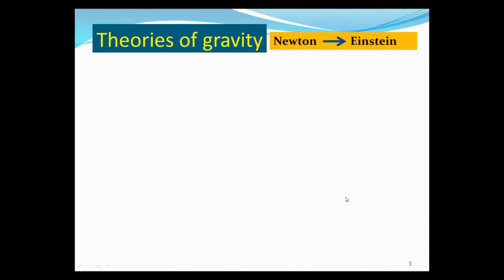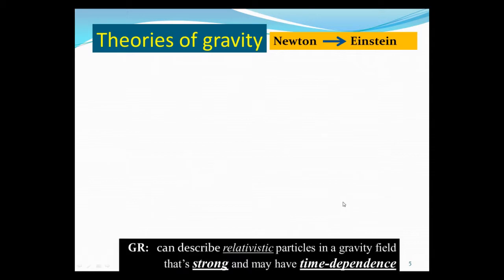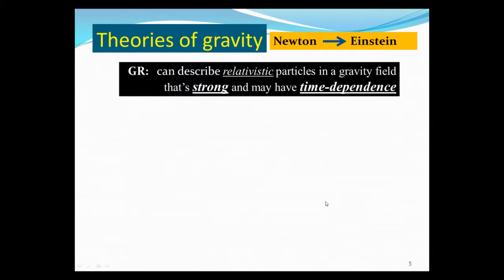So, Einstein's theory supersedes Newton's theory. In what sense is it an extension of Newton's theory? GR can describe, not surprisingly, relativistic particles—by relativistic we mean particles that can move close to the speed of light. But also, GR is the theory of gravity where the gravitational field can be much stronger than Newton's theory and can have time dependence, whereas Newton's theory is for gravitation that's weak and static.